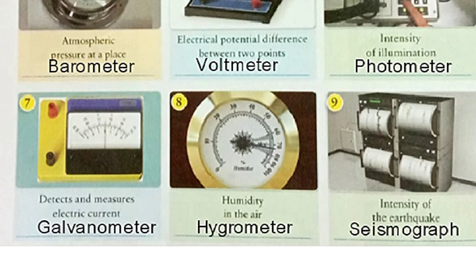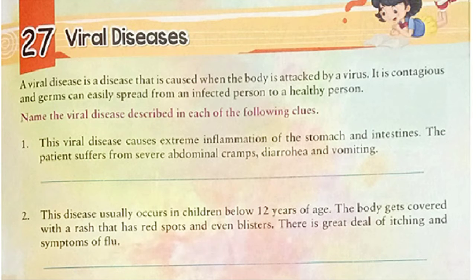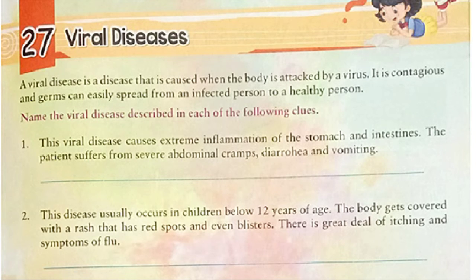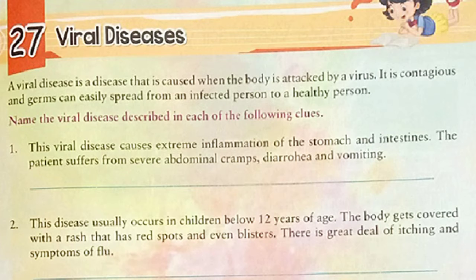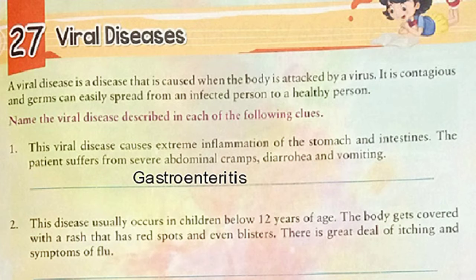Now let's move to our exercise number 27, Viral Diseases. A viral disease is a disease that is caused when the body is attacked by a virus. It is contagious and germs can easily spread from an infected person to a healthy person. Here we have to name the viral diseases described in each clue. The first one: this viral disease causes extreme inflammation of stomach and intestines. The patient suffers from severe abdominal cramps, diarrhea and vomiting. It is gastroenteritis.